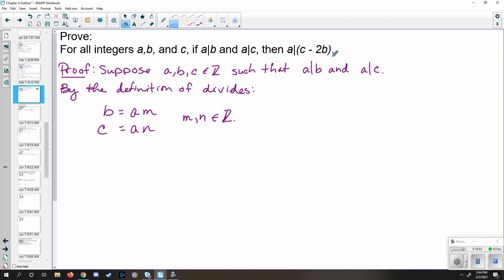So regardless of what's in here, see if you can substitute and factor out an a in some capacity. Again, that's kind of what we're working towards, we can worry about the details later. So here, go ahead and substitute. So in other words, c minus 2b is equal to an minus 2am. And since these both have an a, you can factor that out, and we're left with n minus 2m.